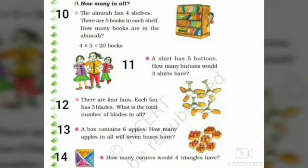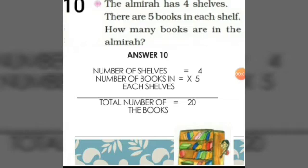Now let us see the next 5 sums from the textbook. Let us see the 10th sum. The Almira has 4 shelves. There are 5 books on each shelf. How many books are in the Almira? The number of shelves is 4 and the number of books on each shelf is 5. To find the total number of books in the Almira, we multiply 4 into 5 to get the answer 20.